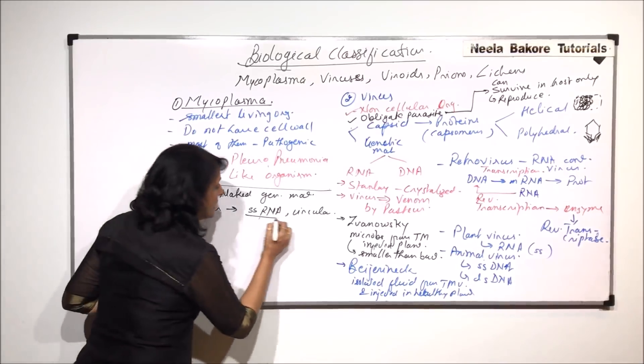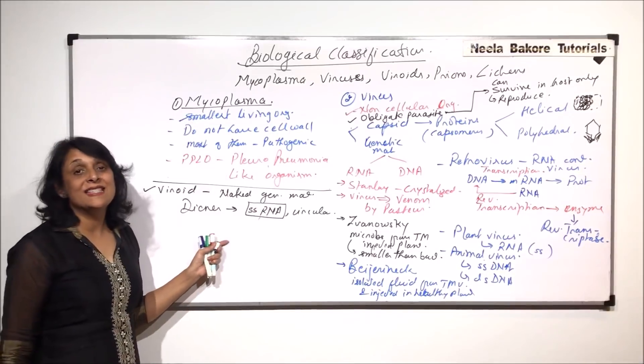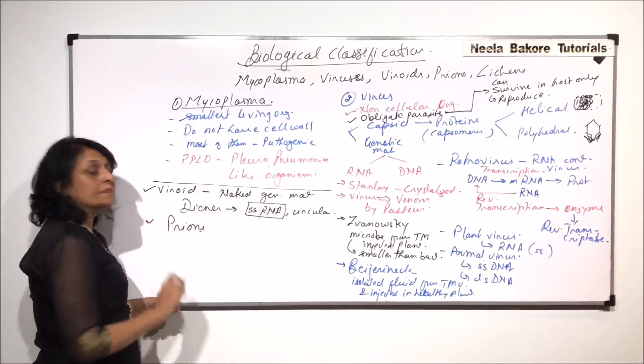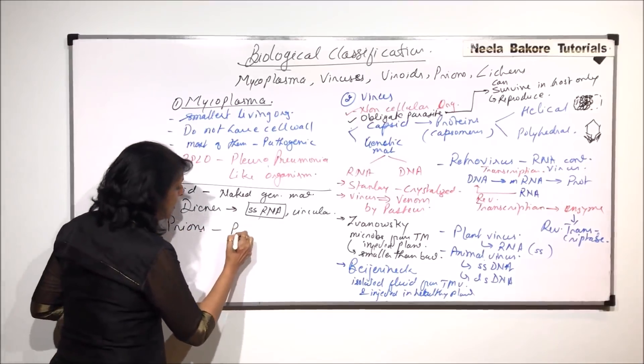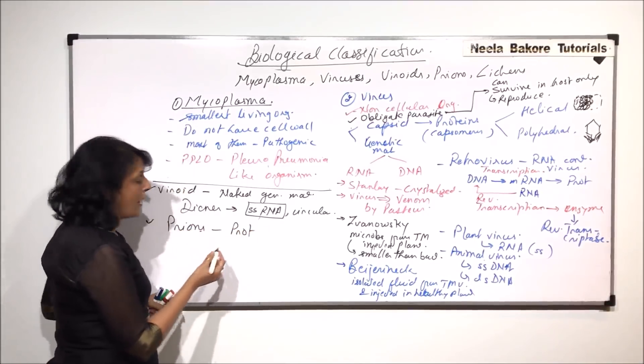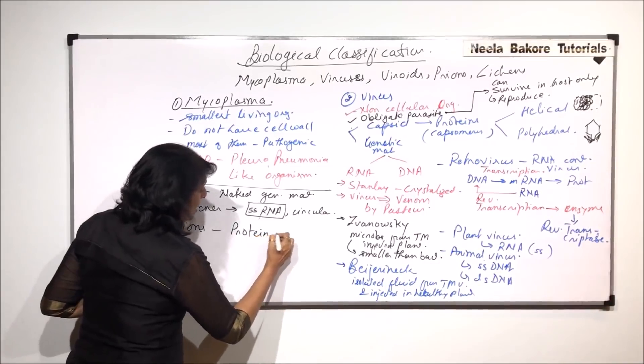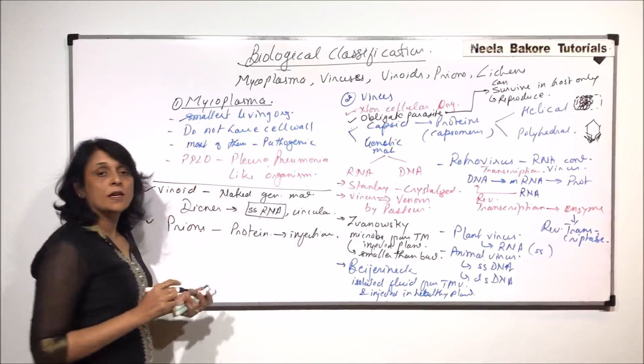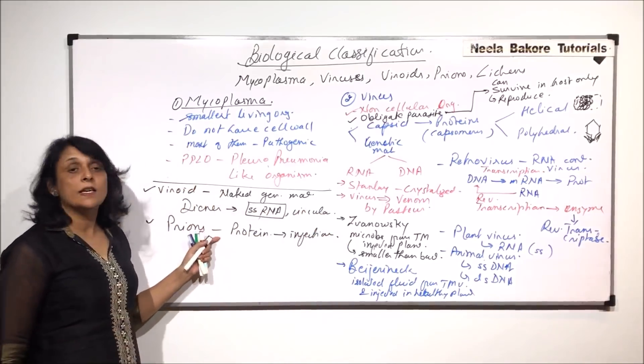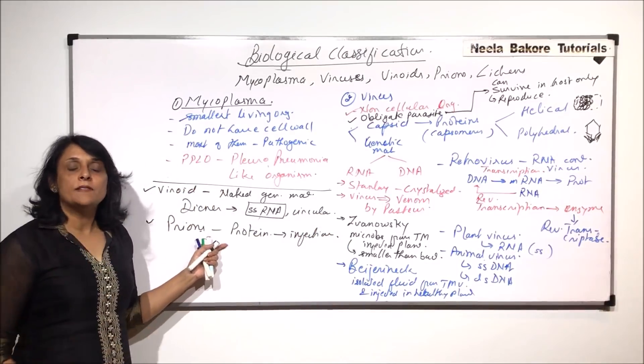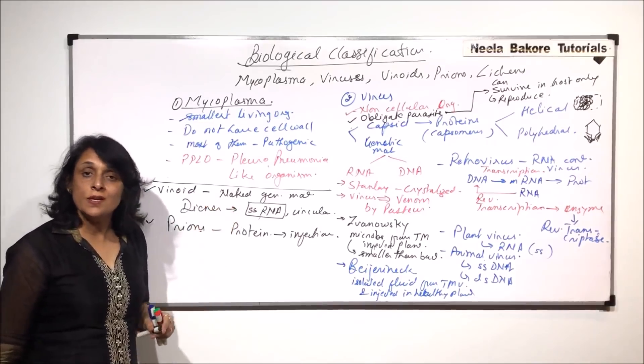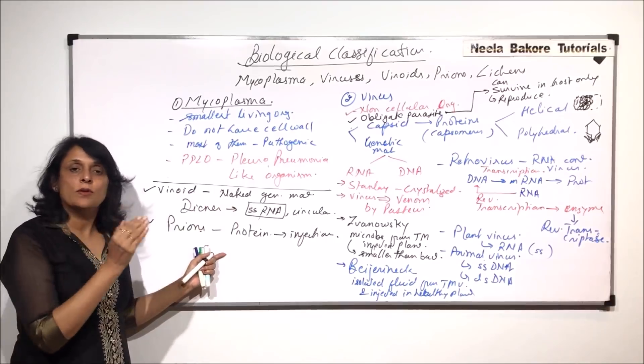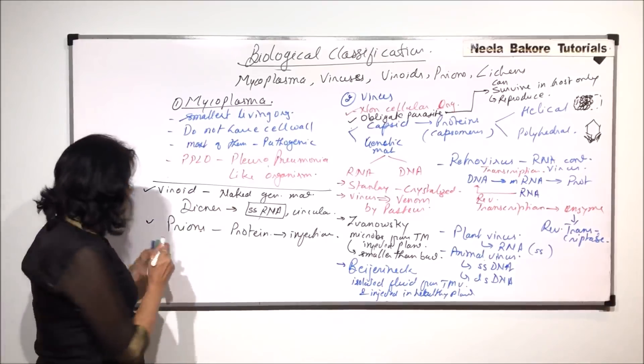Then the prions. Prions are nothing but the proteinaceous or protein part. Protein which is infectious. If we are talking in terms of virus, this is only the protein part which is disease-causing. And viroids are only the genetic part which is disease-causing.